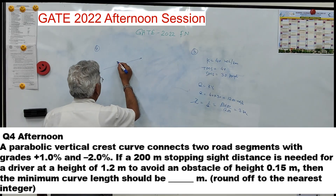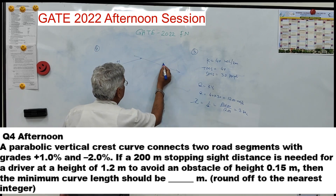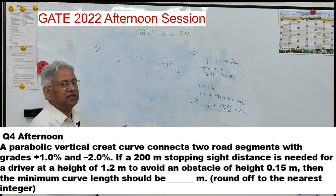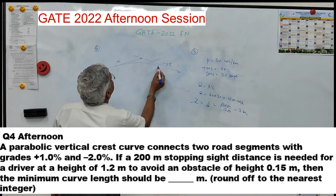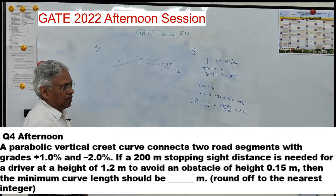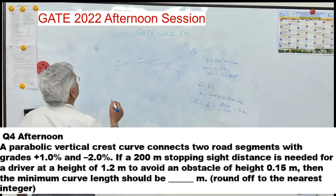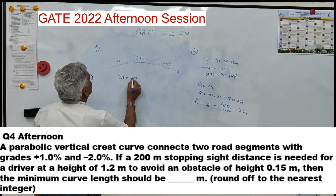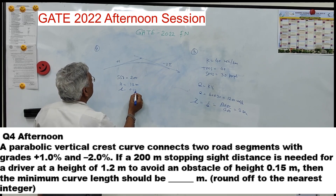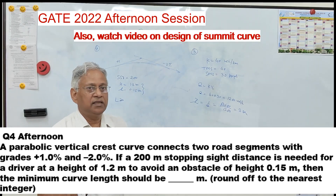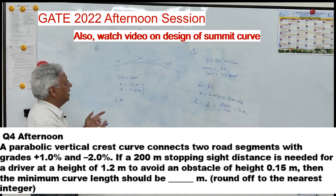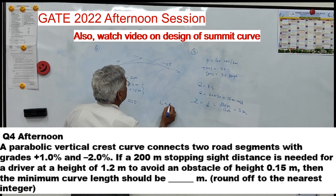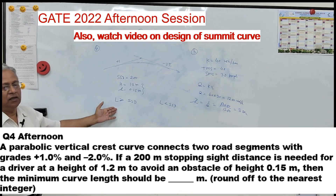Question four: a parabolic vertical crest curve connects two road segments with gradients +1% and -2%. Since it is a crest curve, a positive gradient is followed by a negative gradient. If a 200-meter stopping sight distance is needed, with driver's eye height 1.2 m and object height 0.15 m, we need the length of the vertical curve. There are two cases: L > SSD or L < SSD.